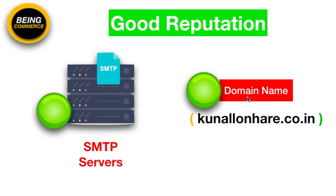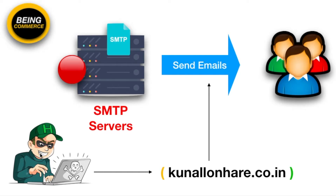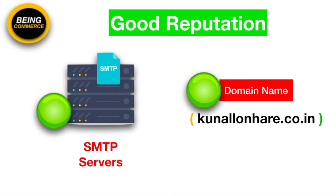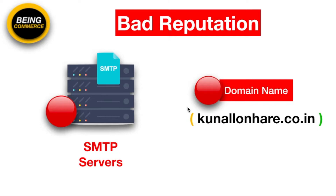Suppose my SMTP server and domain name have good reputation. Now let's take a scenario where there's a hacker, spammer, or bad person who sends spammy emails. This person has started using my domain kunallunare.co.in because it has a very good reputation, and he is sending bad emails using very bad SMTP servers. As a result, my domain name and SMTP server have started getting a bad reputation.